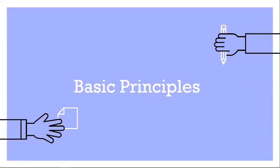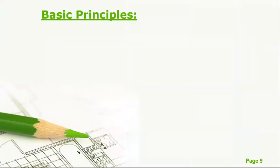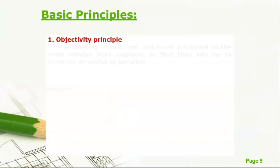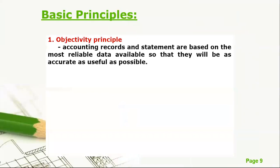The basic principles begin with the objectivity principle. Accounting records and statements are based on the most reliable data, so they are as accurate and useful as possible — supported with appropriate receipts and evidence, and not based on biases.